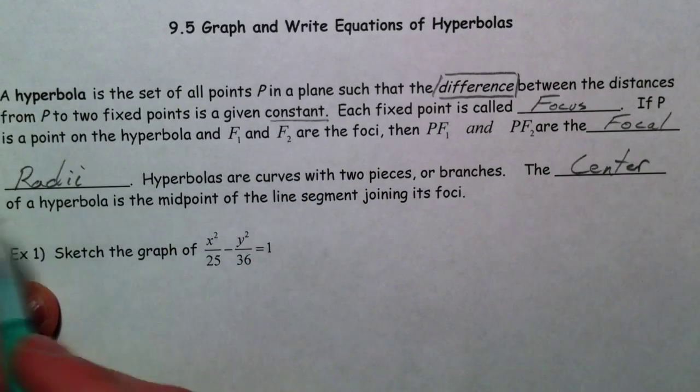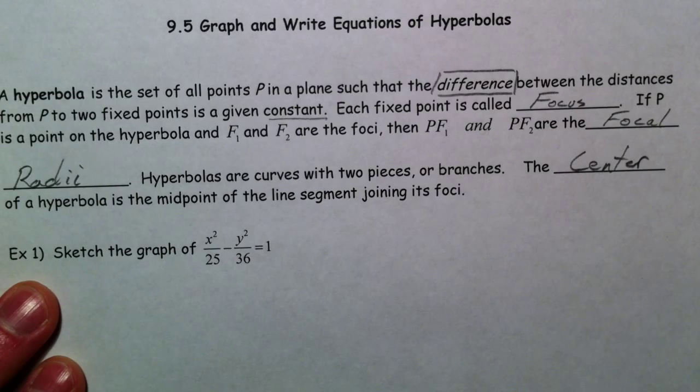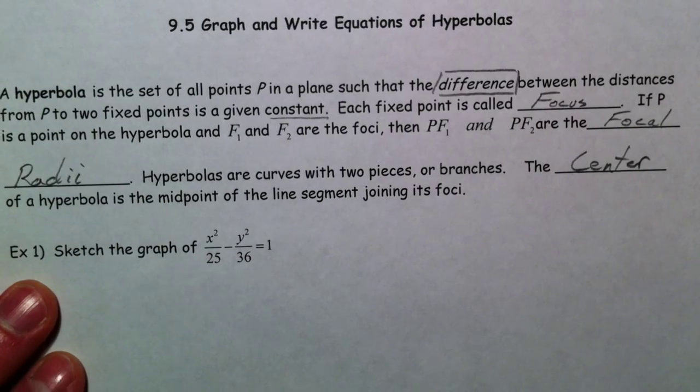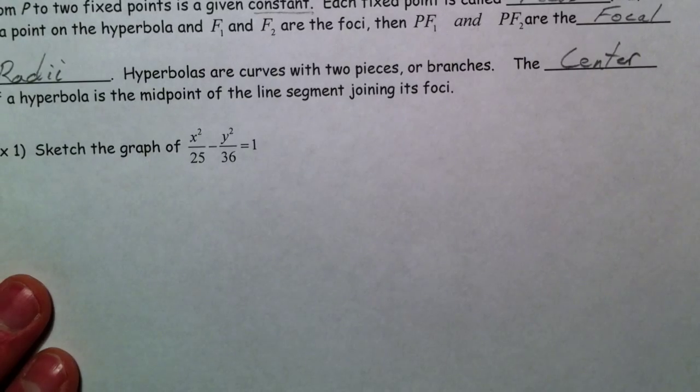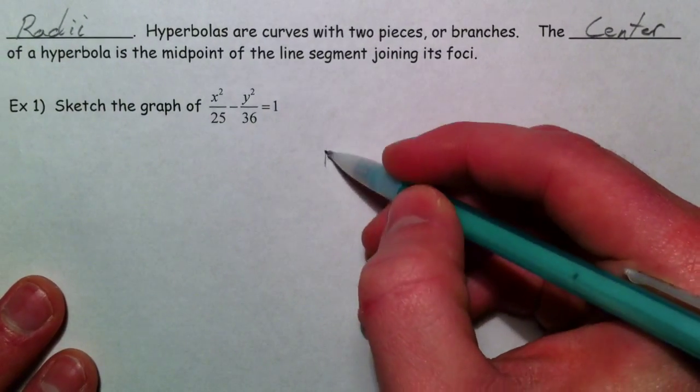We still have focal radii, but now we have sort of an inside-out ellipse. And we're going to have asymptotes, and we're going to start off with an example, just because it's a lot easier.